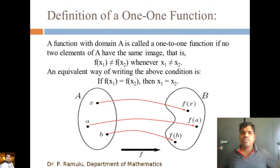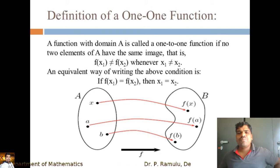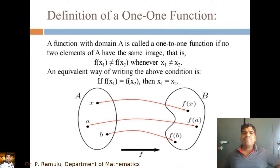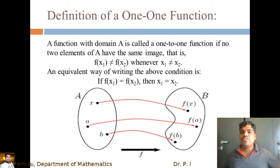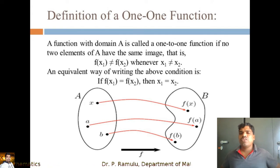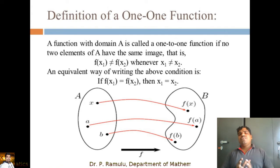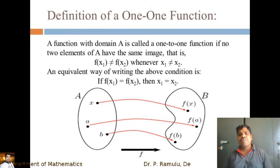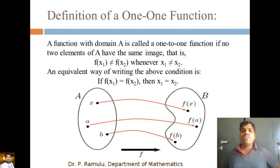Definition of One-One Function. We have already discussed the definition of a one-one function. A function with domain A is called a one-to-one function if no two elements of A have the same image. That is, f(x₁) ≠ f(x₂) whenever x₁ ≠ x₂. Equivalently, if f(x₁) = f(x₂) then x₁ = x₂. In brief, distinct elements have distinct images.